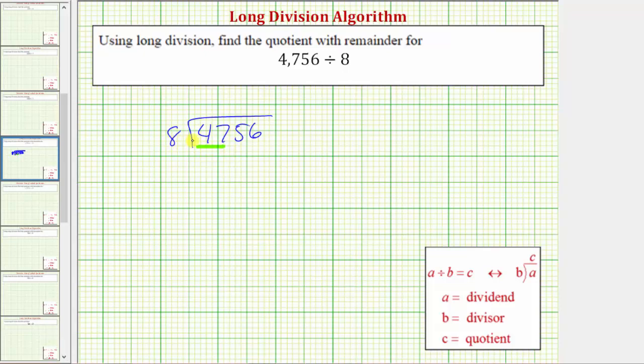So now we determine how many eighths there are in 47. Well, because 5 times 8 is equal to 40, and 40 is less than 47, we know there's at least 5 eighths in 47. If we try 6 times 8,